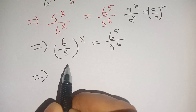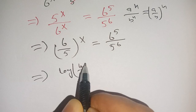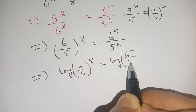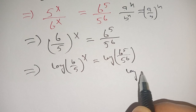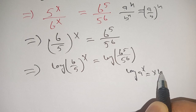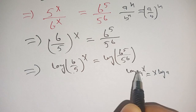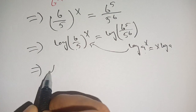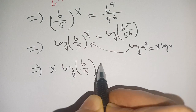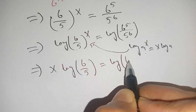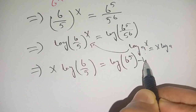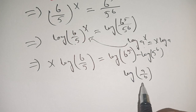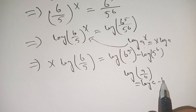We get log of (5/6)^x is equal to log of 6^5 divided by 5^6. We know that log(a^x) = x·log(a). Here a is 6/5 and the exponent is x. Using this identity on the left-hand side, we get x·log(6/5) is equal to log(6^5) minus log(5^6), because log(a/b) = log(a) minus log(b).